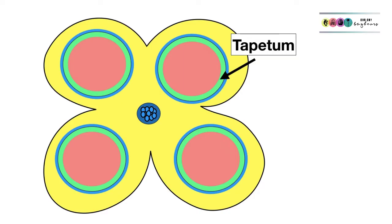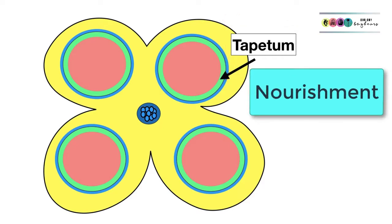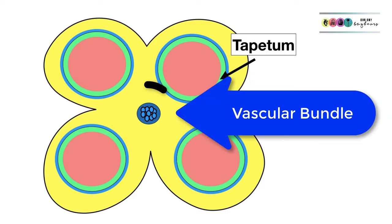When we look inside the anther, we see the four pollen sacs and we see that each one of them is surrounded by a layer of cells known as the epidermis. Lining each one of those pollen sacs is the tapetum. This is a layer of fibrous cells and the function of the tapetum is to provide nourishment for the development of all these pollen grains. This is just a vascular bundle at the centre of the anther.